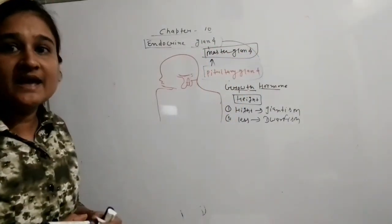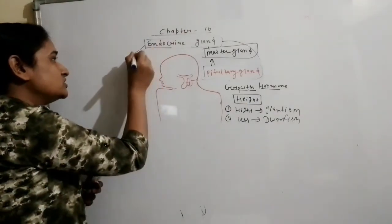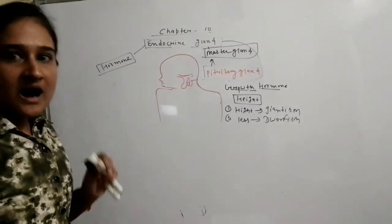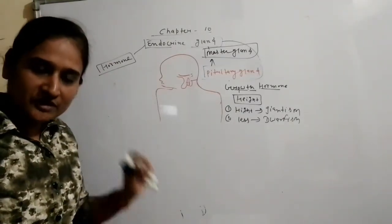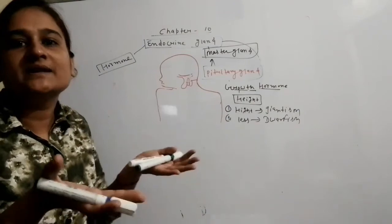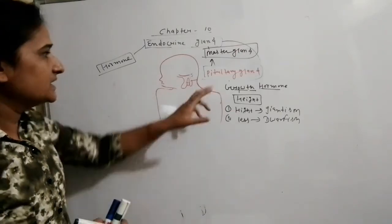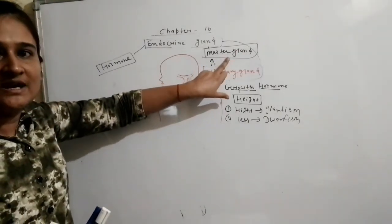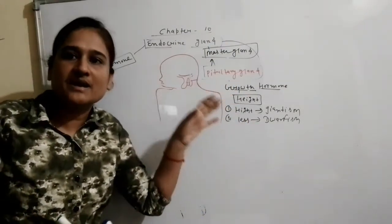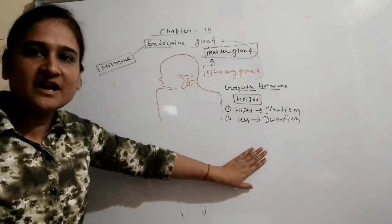The pituitary gland is known as the master gland. It is a type of endocrine gland which secretes hormones that control body functions. The pituitary gland is known as the master gland because this gland controls many other glands.